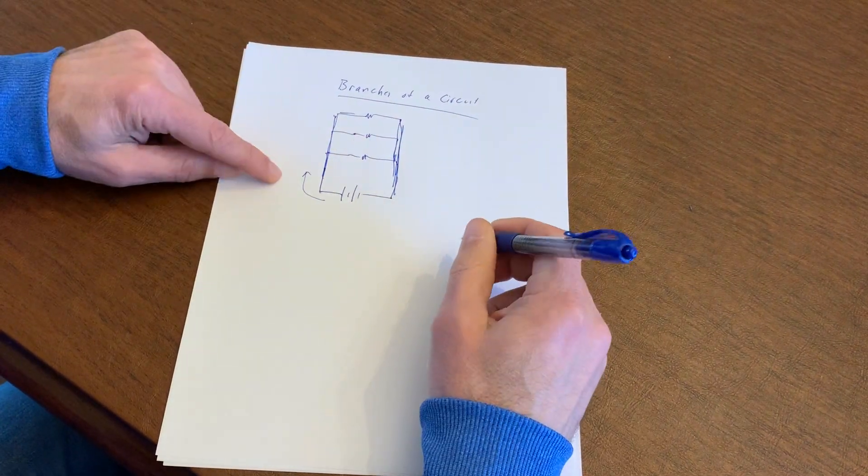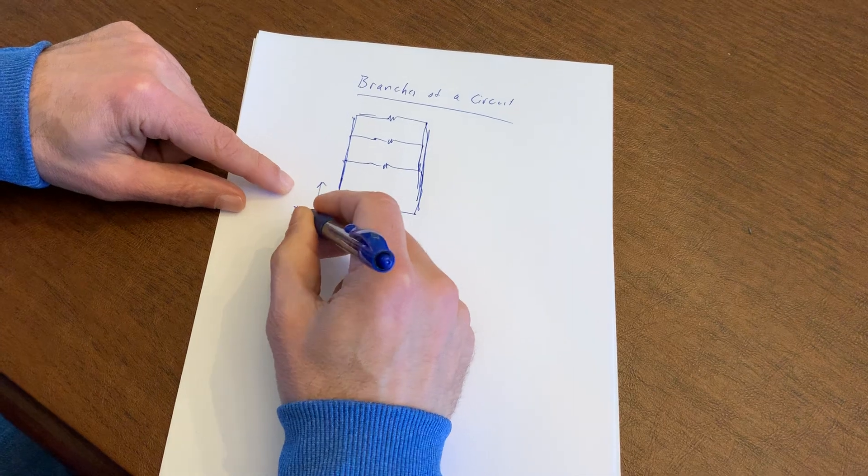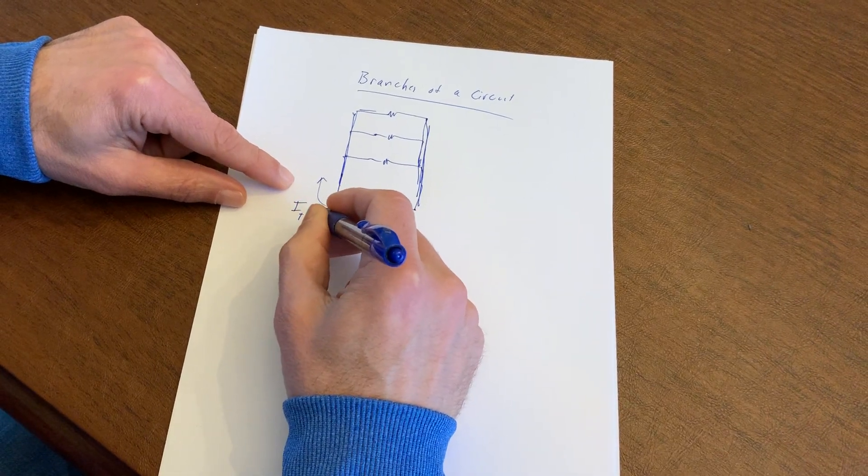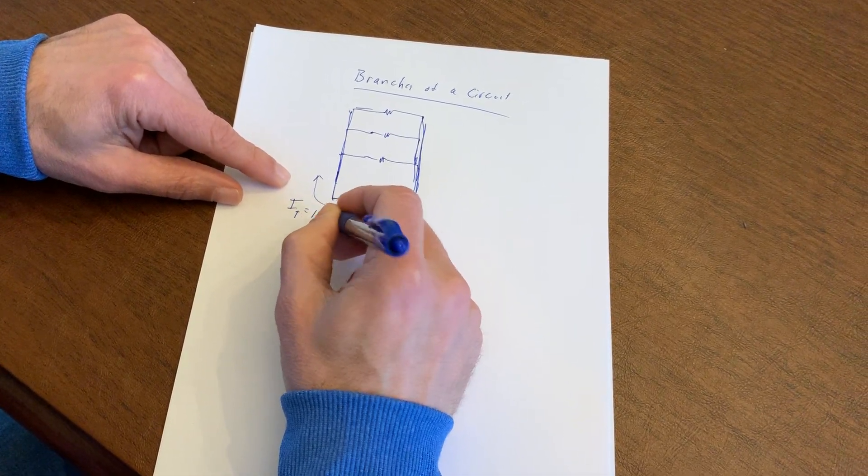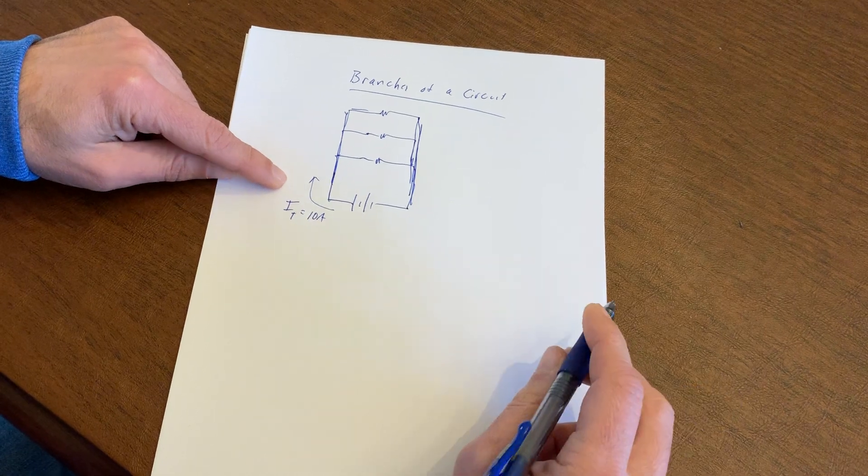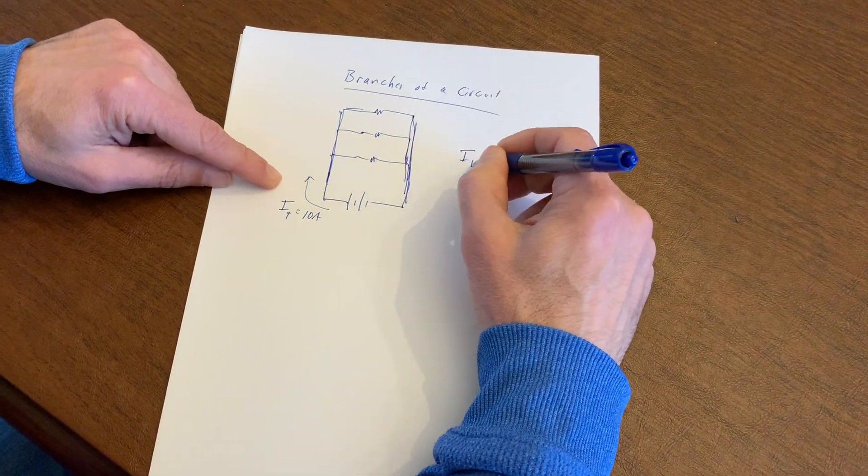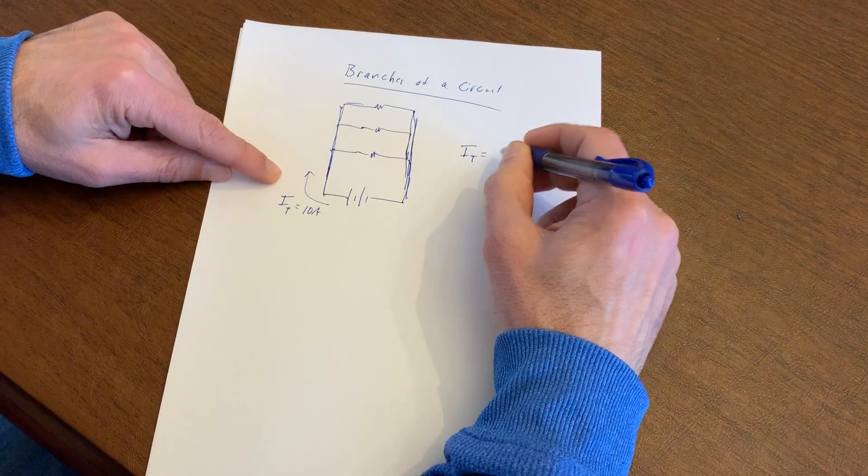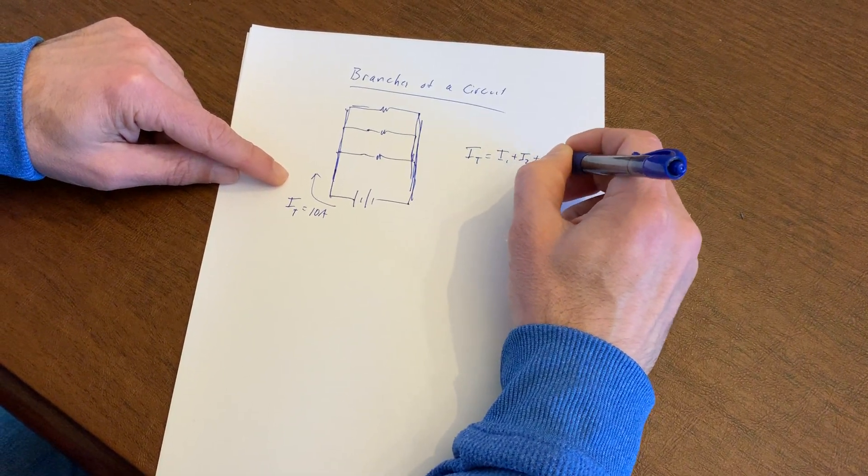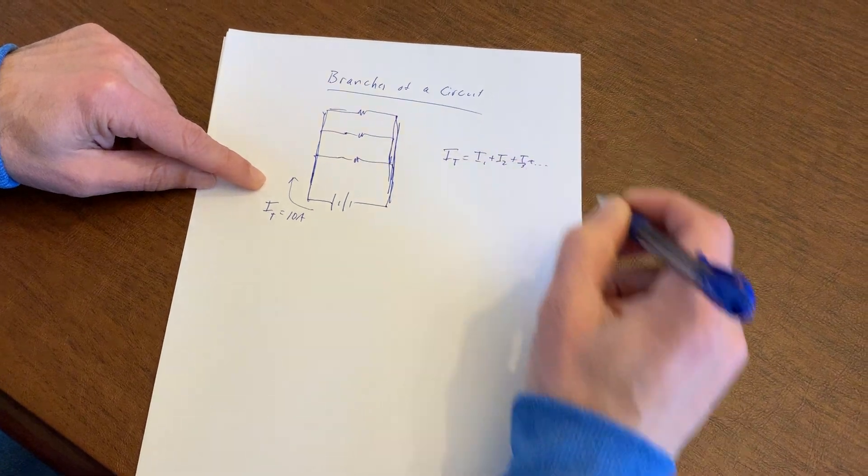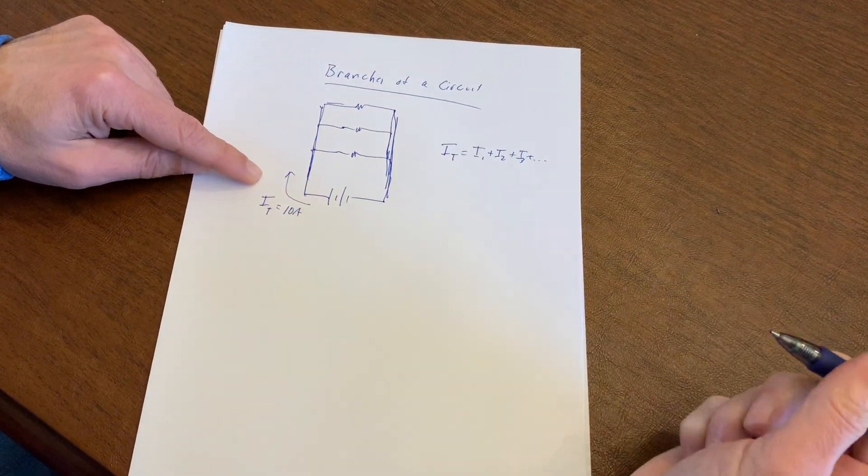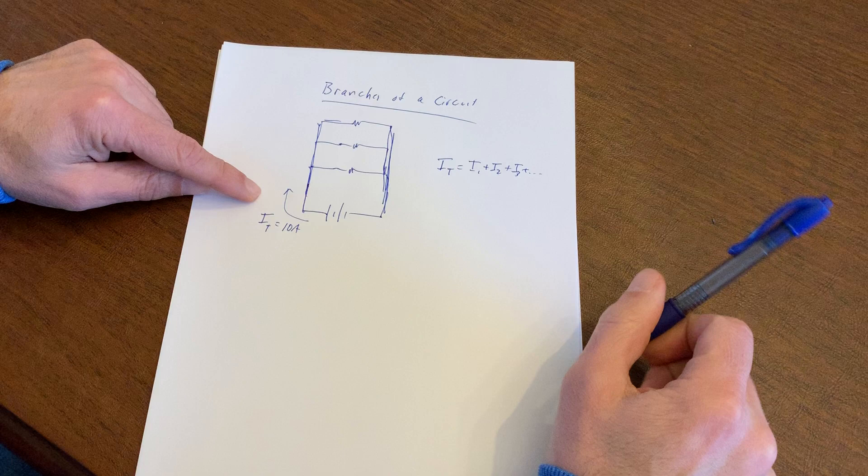Let's suppose I get a current that comes out of here. Let's make this current total, let's just call it 10 amps. Now, what happens in a parallel circuit? Remember, the total current I_total is equal to I1 plus I2 plus I3 plus dot dot dot. So what does that mean? Let's see if we can understand what that means a little bit.